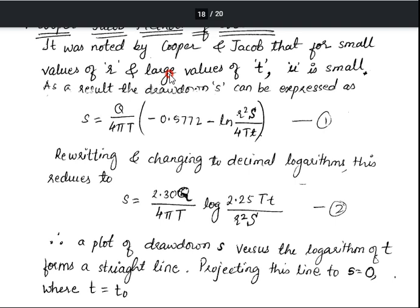As a result, the drawdown s can be expressed as: s = Q / (4πT) × (−0.5772 − ln(r²S / 4Tt)). This is Equation 1.